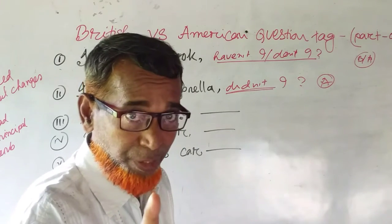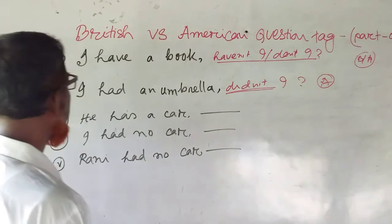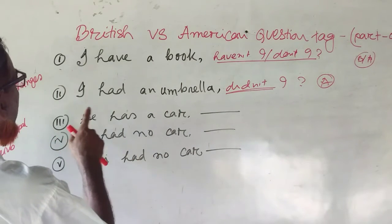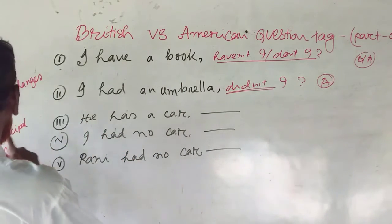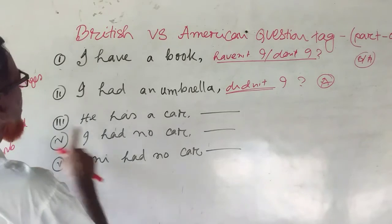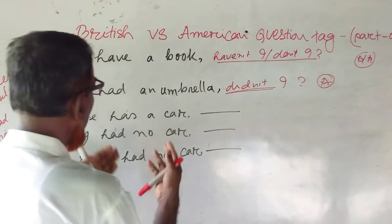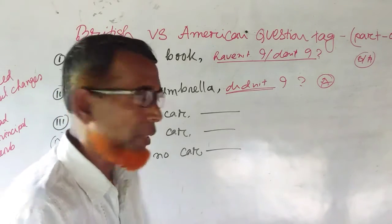I hope you understand, my dear lovely viewers. Next, I am going to tell you: 'I have' and 'has' are meant to be the main verb for number one person, which means when 'have' or 'has' is used as a main verb — okay.